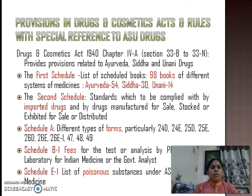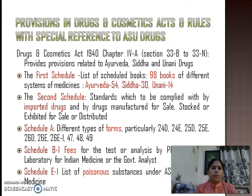There are further provisions in the Drugs and Cosmetic Act and Rules with special reference to ASU drugs. The Drugs and Cosmetic Act, 1940, Chapter 4A, Sections 33B to 33N, provides provisions related to Ayurveda, Siddha, and Yunani drugs. The First Schedule of this Act contains a list of scheduled books — a total of 98 books of different systems of medicine: 54 for Ayurveda, 30 for Siddha, and 14 for Yunani. These books are very good references for manufacturing ASU drugs. The Second Schedule mentions the standards which need to be complied with by imported drugs and by drugs manufactured for sale, stocked, or exhibited for sale or distribution.